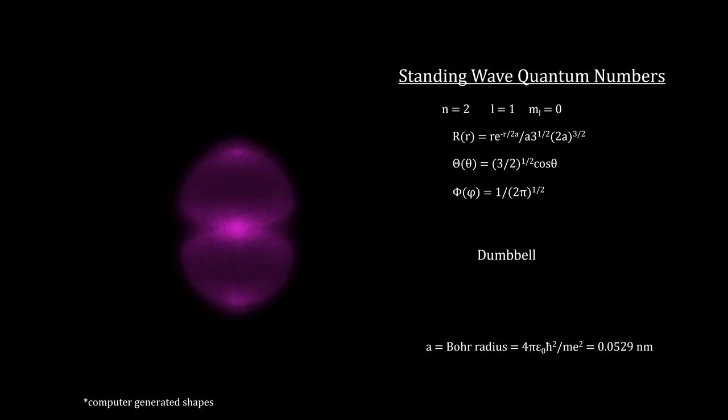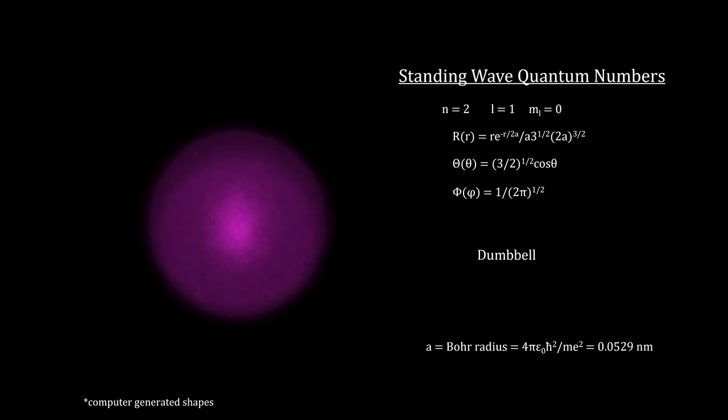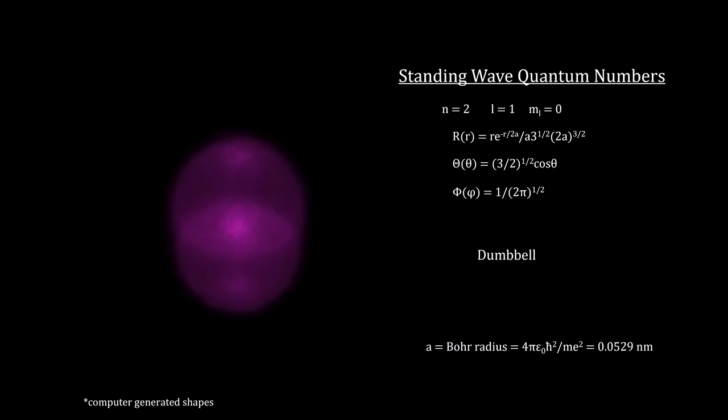And, surprisingly, for each quantized angular momentum subshell, even the allowed orientations are quantized into orbitals, and designated by the letters M sub L. It determines the orientation of the orbital.